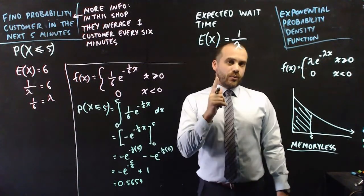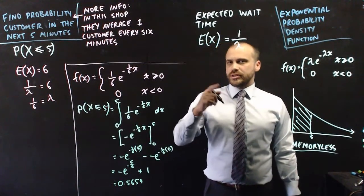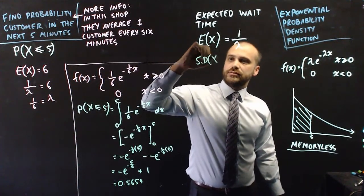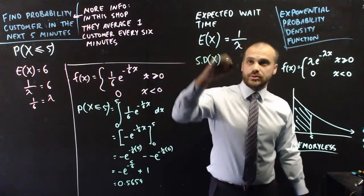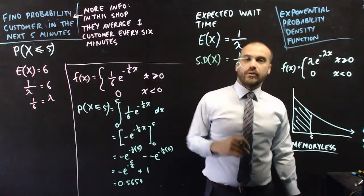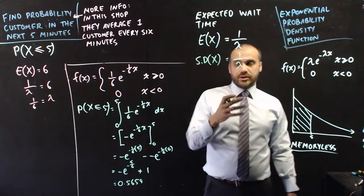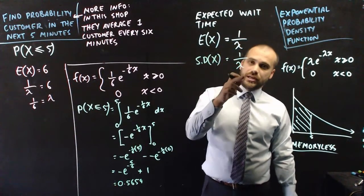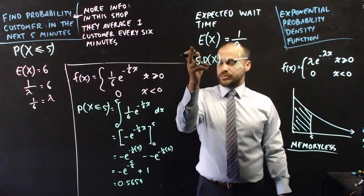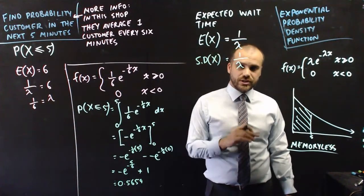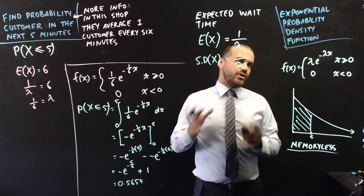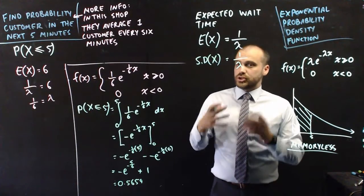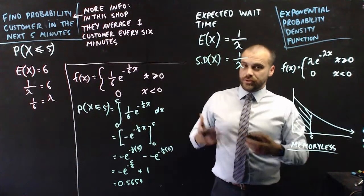One last thing. You can also find the standard deviation very easily. The standard deviation of x is equal to one over lambda. So if you know what lambda is you can find the standard deviation. If you know what standard deviation is you can find lambda. If you know what lambda is you can find the expected value and vice versa. These questions can be asked in a variety of different ways but you've done probability density functions before so you should be able to handle this.